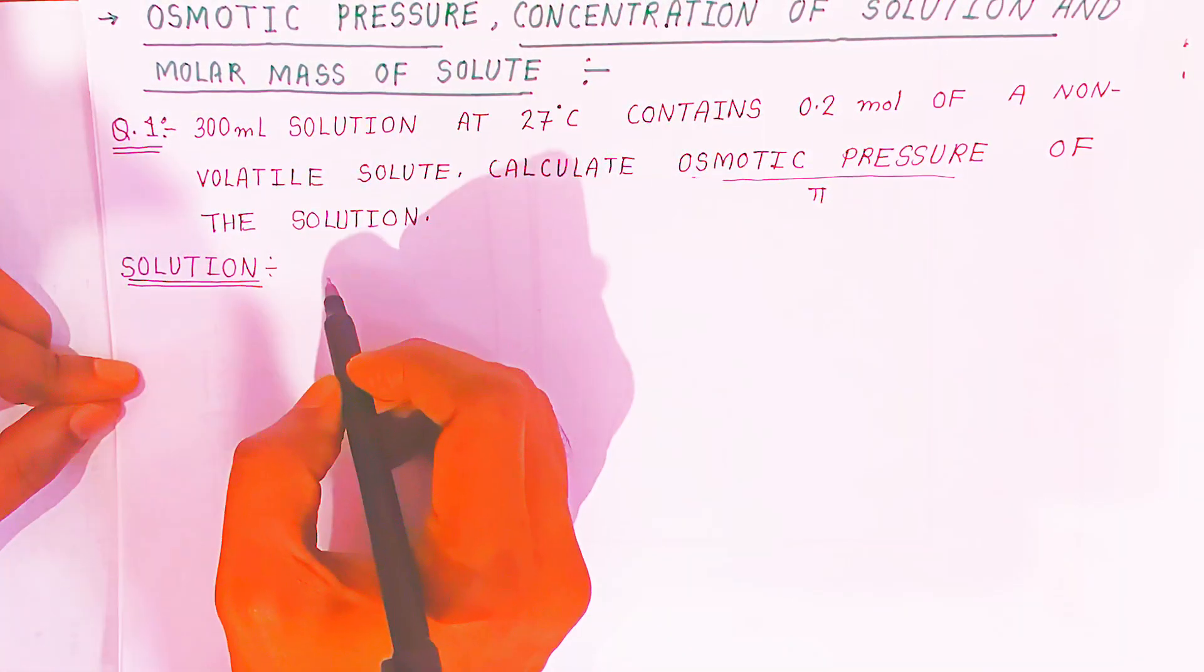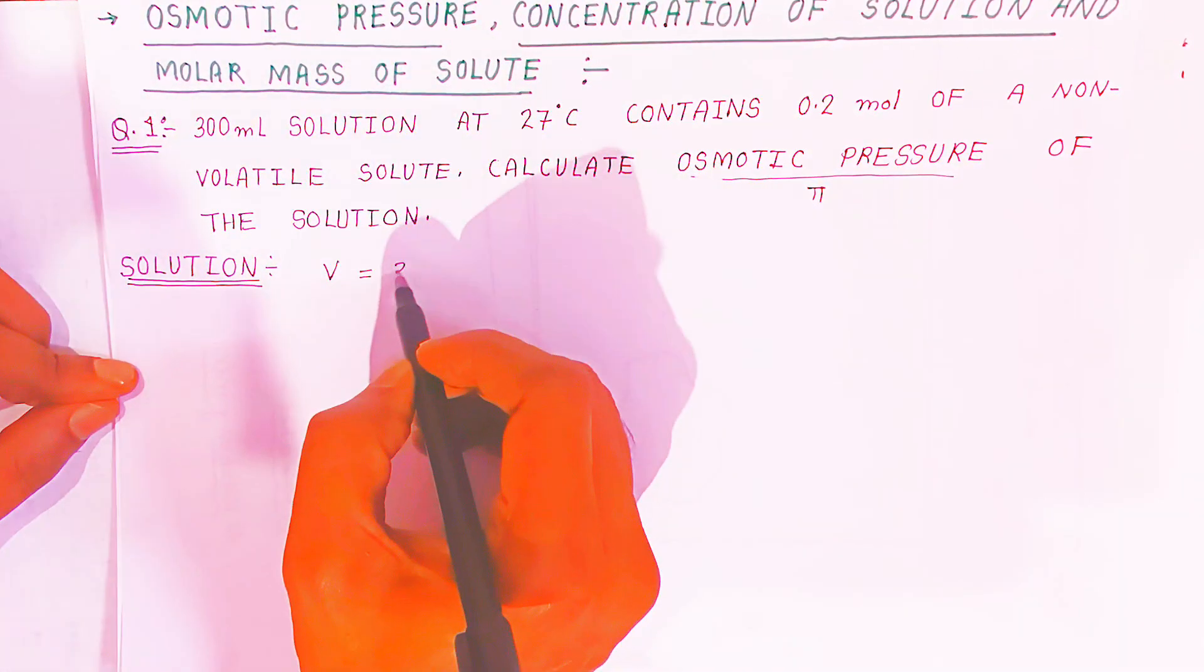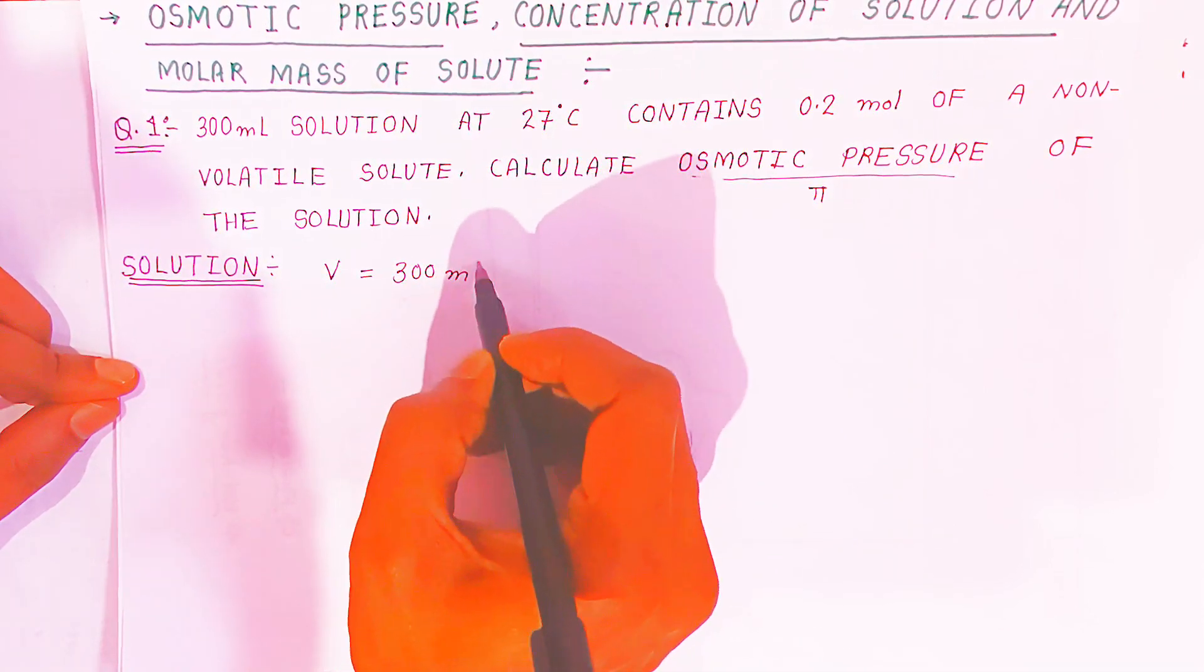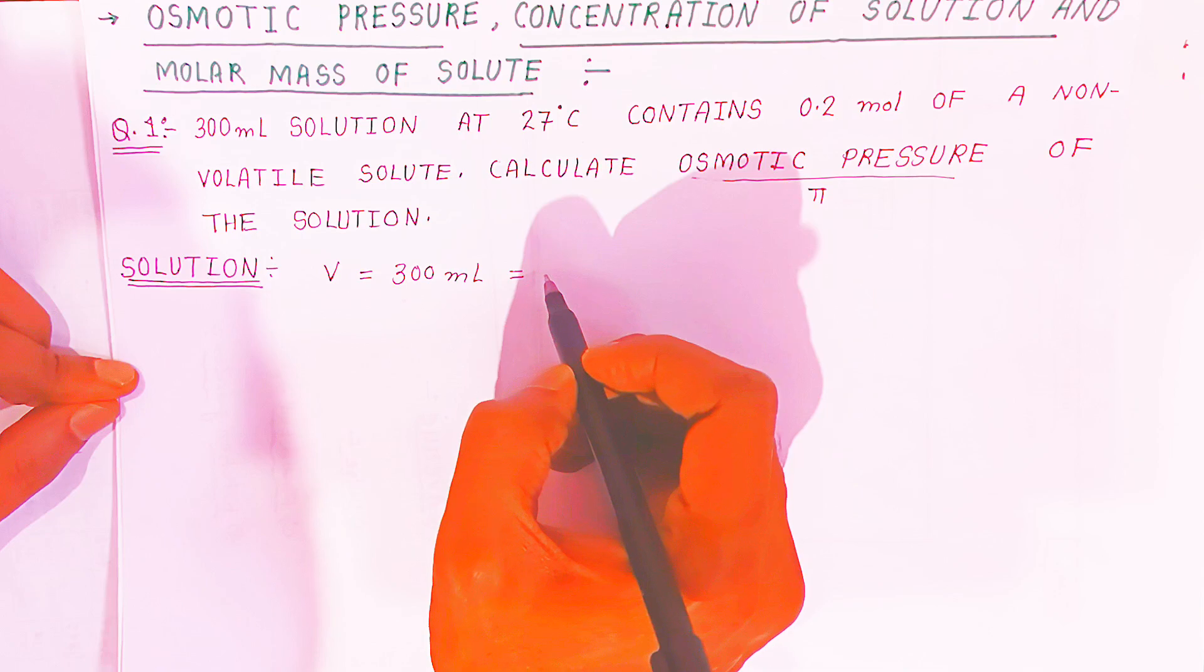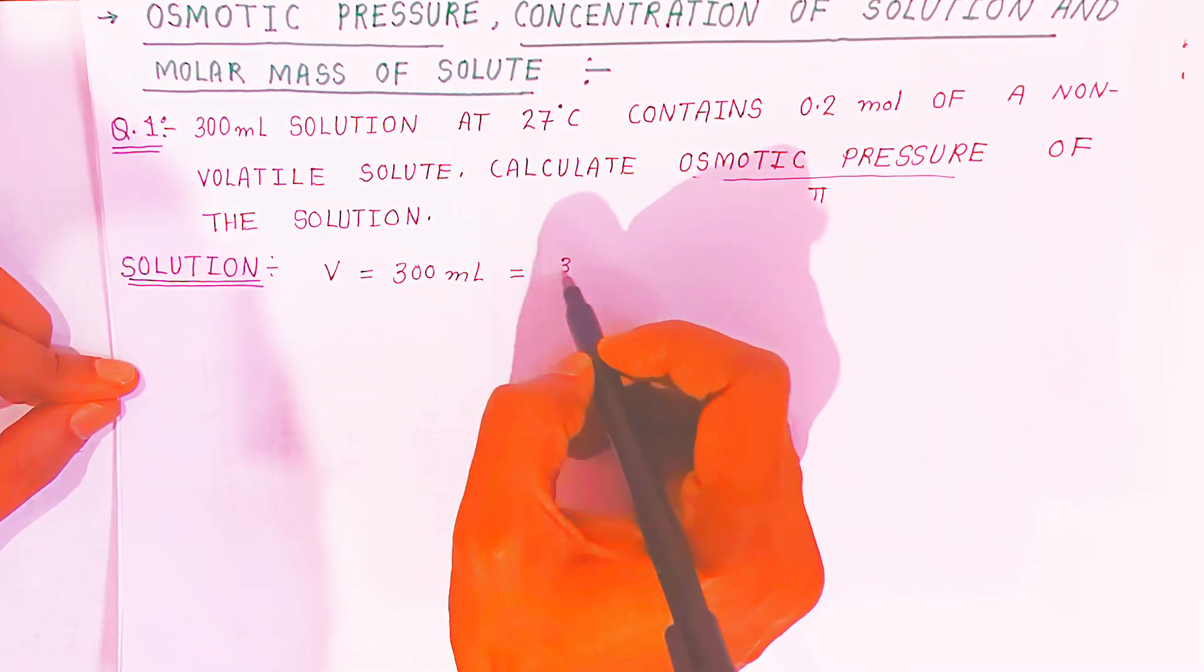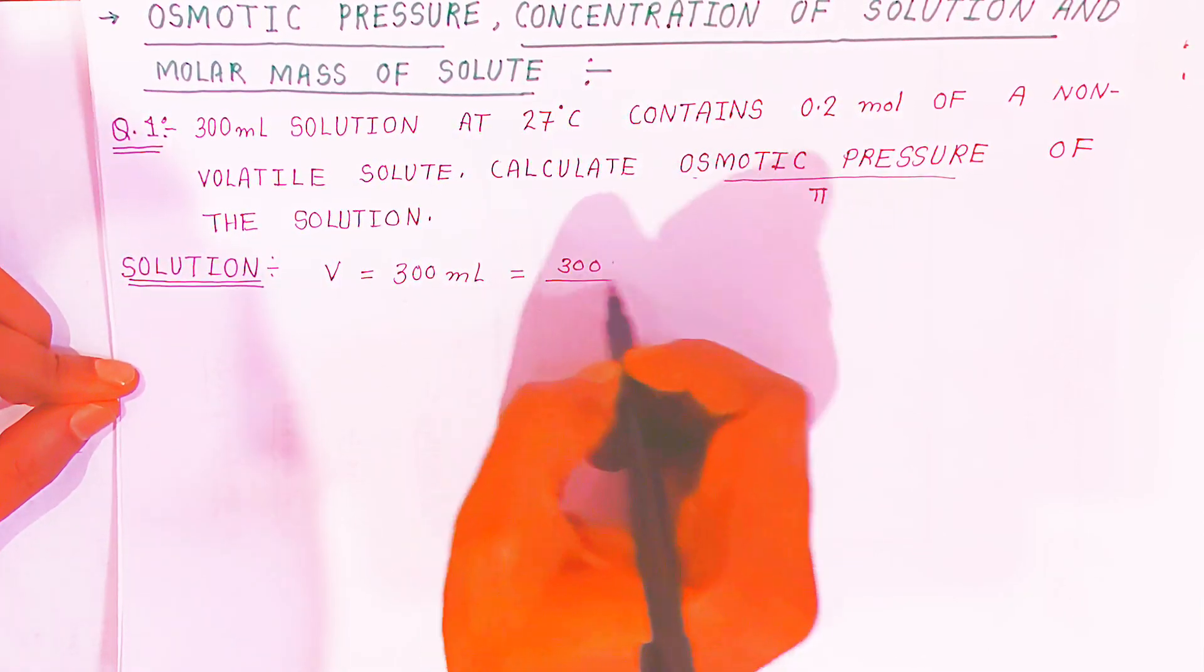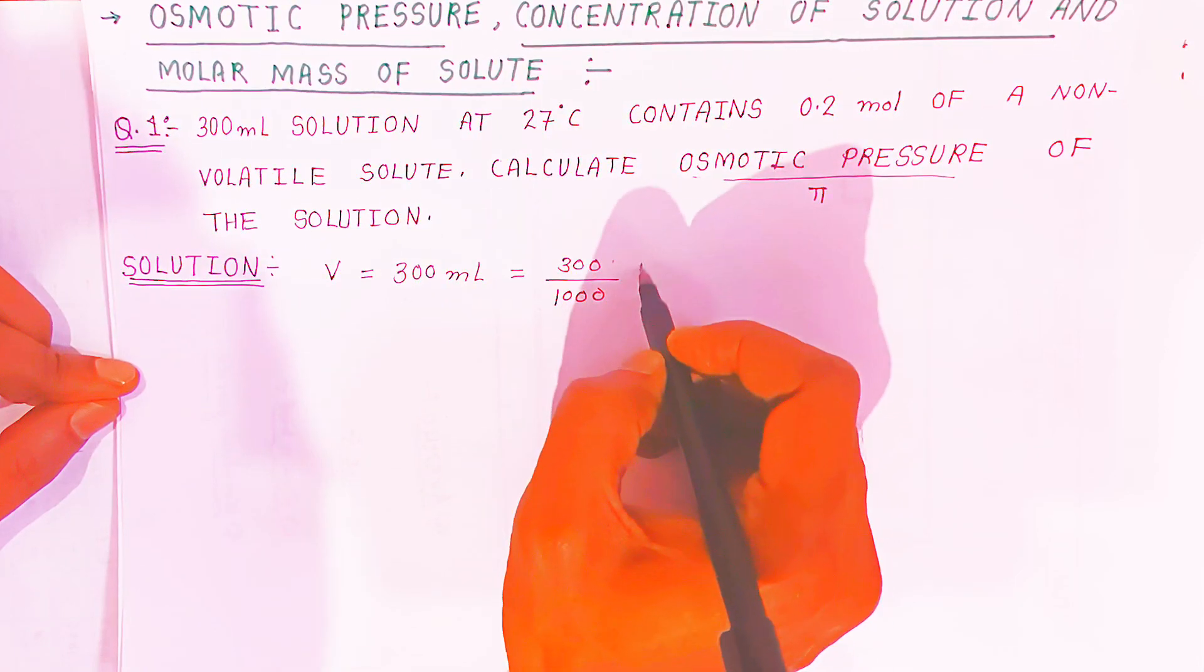Volume is given 300 ml, so you have to convert into liters. You have to divide 300 ml by 1000. Divide 300 by 1000, it will convert into liters.